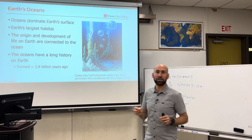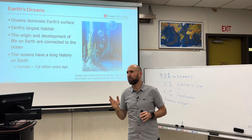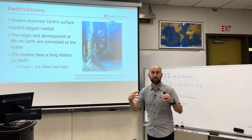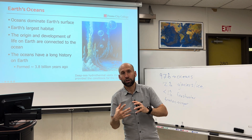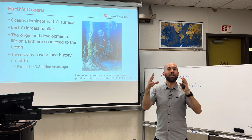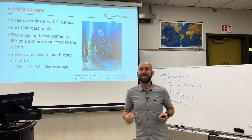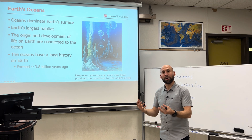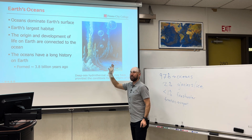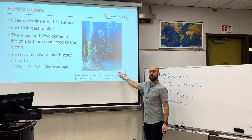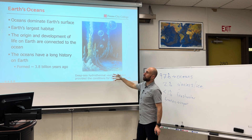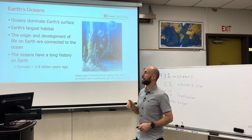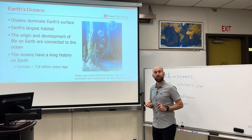Oceans themselves have a long history on earth, forming roughly 3.8 to 4 billion years ago. When earth started, it was a big, hot, homogenous ball of material that then differentiated into its internal structure — core, mantle, crust — which went on to cool on the outside, forming earth's first continents. That led to hundreds of millions of years of rain that started to pool up and collect and develop earth's first oceans. Life is believed to have begun at hydrothermal vents, areas that are nutrient rich and have all of the right ingredients that could have been the spark for life to begin.